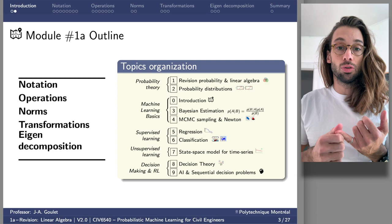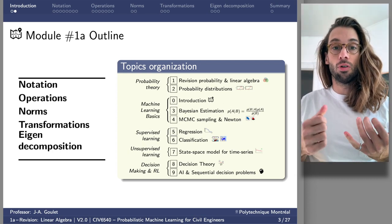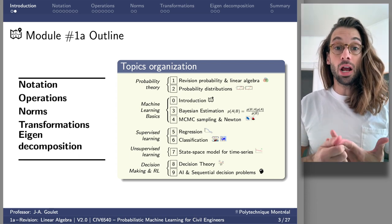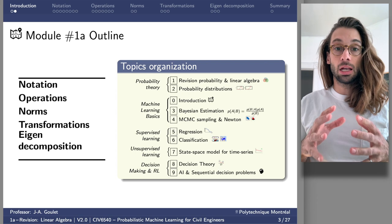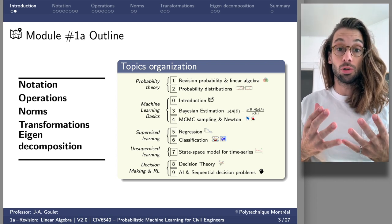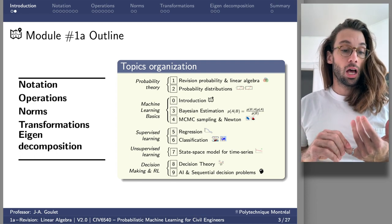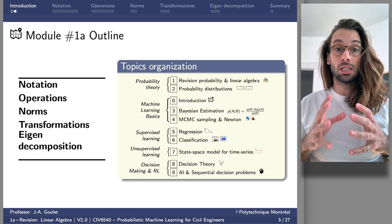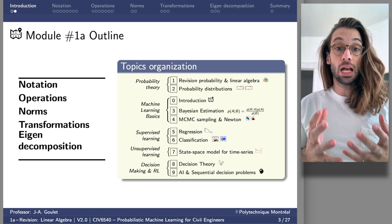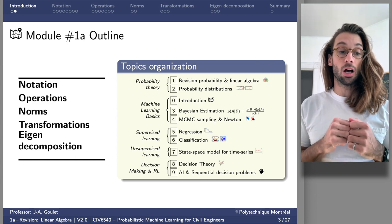First, we're going to introduce the notation associated with linear algebra for variables, vectors, matrices, etc. Then we'll look at the operations we can do with these elements — things specifically that we're going to reuse later on, such as norms. What is the norm of a vector and what can we use that for? We're also going to see transformations: how can we represent transformations using linear algebra and what's the meaning of those transformations?